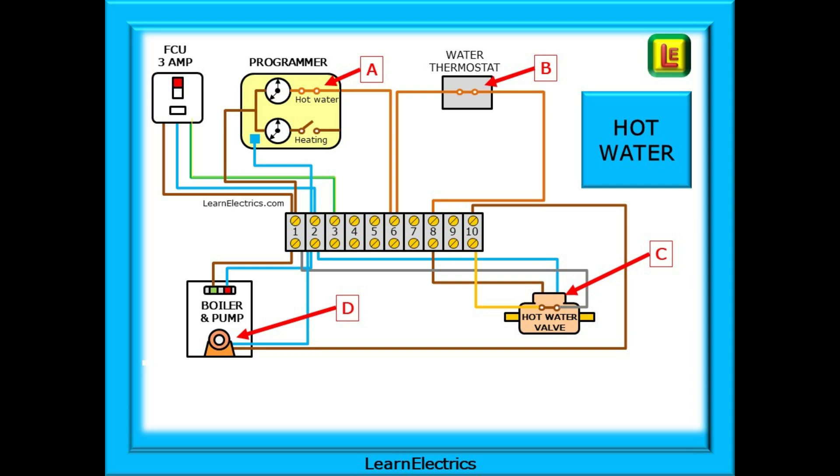Let's strip the system down and look at just the hot water sequence. Power enters the system at the FCU and this should be fitted with a 3 amp fuse, not 13 amps. There is a 10-way connector block and terminals 1, 2 and 3 are occupied with the line, neutral and earth from the FCU. Note that on all these drawings, I have left off the earth or CPC for clarity to make the drawing easier to follow. Please ensure that you install a CPC to all the appropriate places.